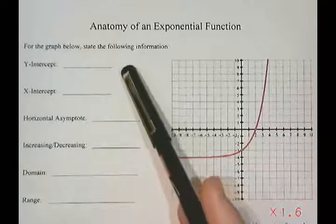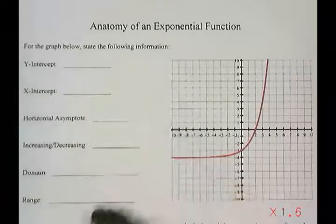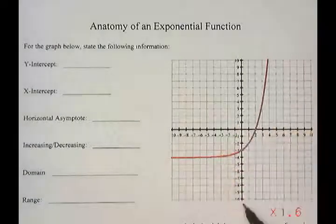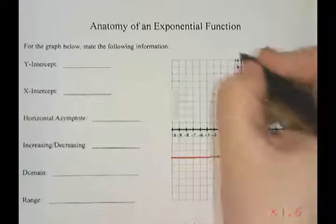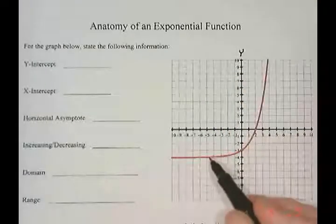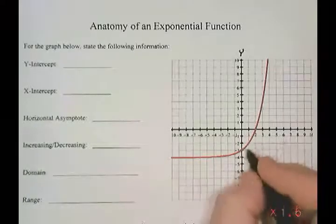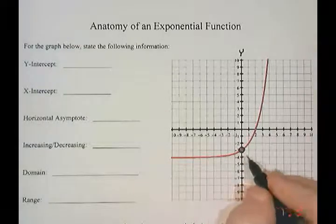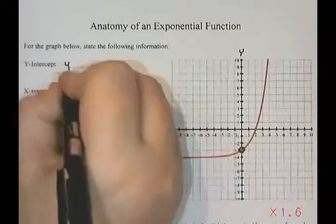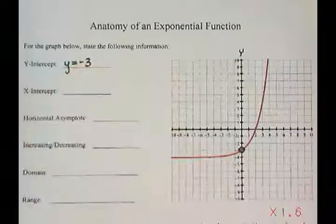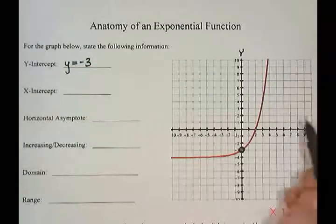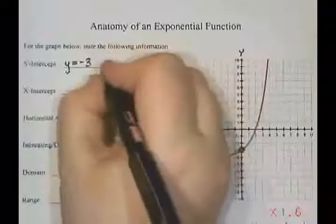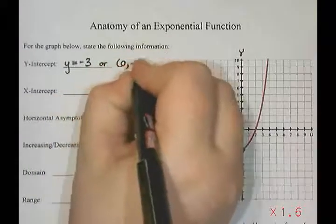We're going to start with the y-intercept. The y-intercept is where the graph crosses the y-axis — the y-axis is the one that goes up and down, it's vertical. I want to look for the point where my graph crosses the y-axis, and it crosses right there at y equals negative 3. So I can either write y equals negative 3, or write it as a coordinate: the point (0, -3).